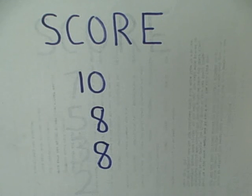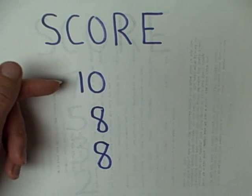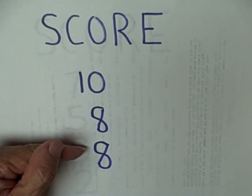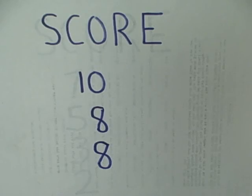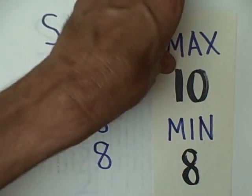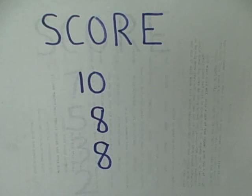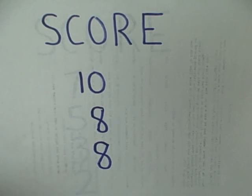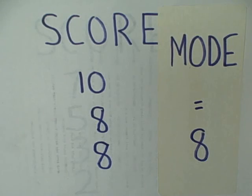Here we have a data set of three participants who have taken a test. Each one has achieved a score between 0 and 10 as a possible theoretical range. One subject got 10 points, another 8, and yet another also got 8 — three scores. Now let's establish the range of scores, minimum to maximum. The minimum would be 8, the maximum would be 10. So our mode must be within that range of 8 to 10. The mode is the most frequent score, and more than one person scored an 8, making 8 the mode of our first data set.